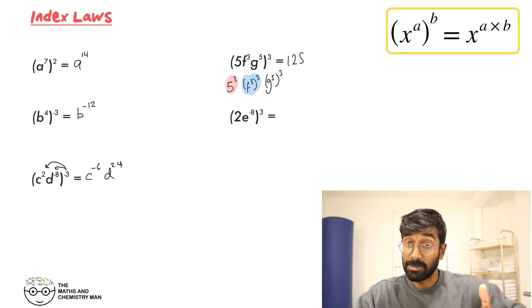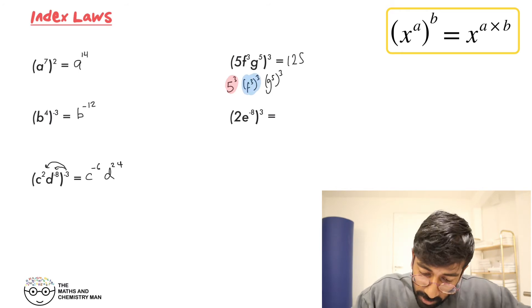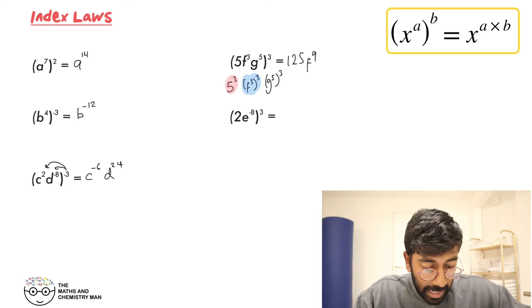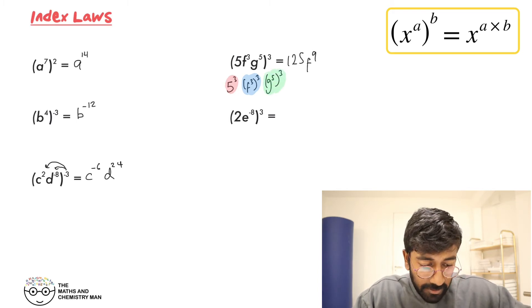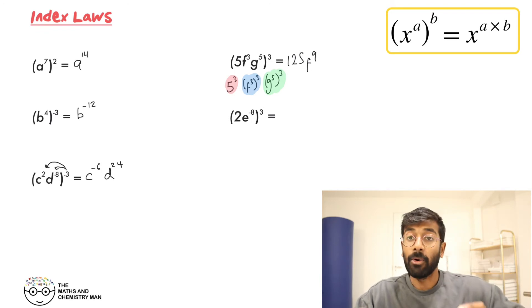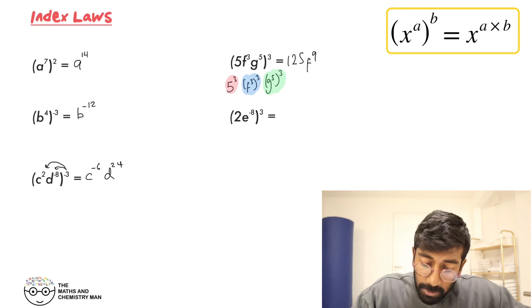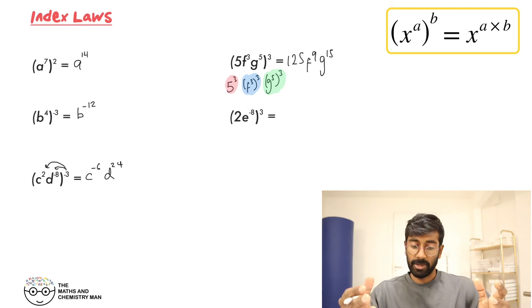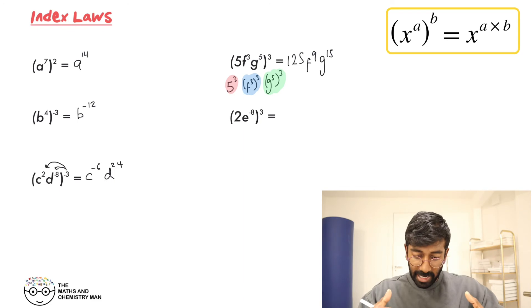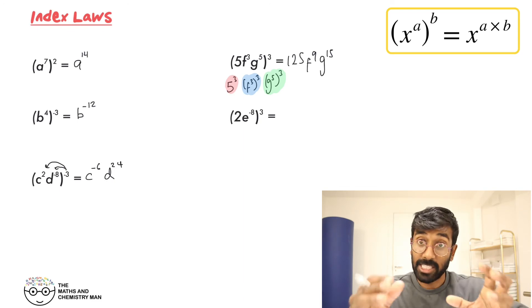Next, F to the 3 all cubed — we just times the powers together: F to the power of 3 times 3 is F to the power of 9. And then G to the 5 all to the power of 3 — multiply those — G to the power of 15.